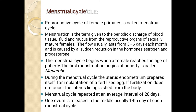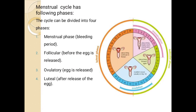The first menstruation at the time of puberty is known as menarche, and the last menstruation is known as menopause. During the menstrual cycle, the uterus endometrium — there are three layers: perimetrium, myometrium, and endometrium. Endometrium prepares itself for fertilization, for implanting the fertilized egg. If fertilization does not occur, the uterine lining sheets off along with the unfertilized egg. The blood vessels present in the endometrium wall also break down, so it comes out in the form of blood. The menstrual cycle repeats at every interval of 28 days. One ovum is released in the middle — on the 14th day — and that period is called ovulation. The menstrual cycle has four stages: menstrual phase (bleeding period), follicular phase, ovulatory period, and luteal phase.